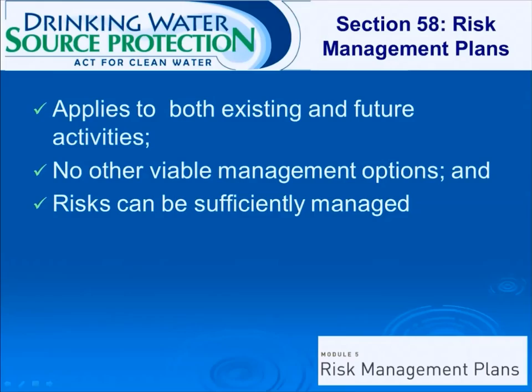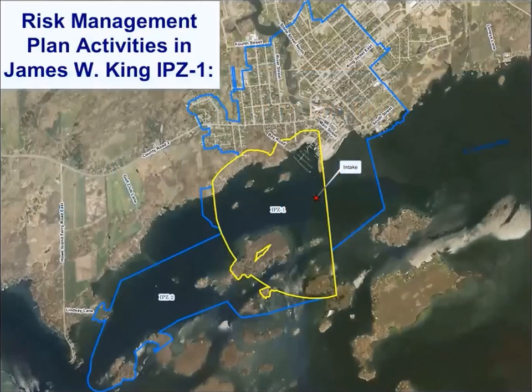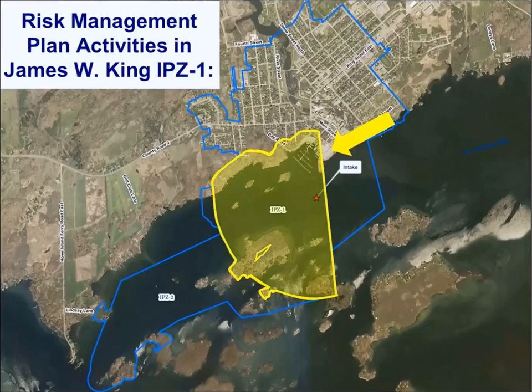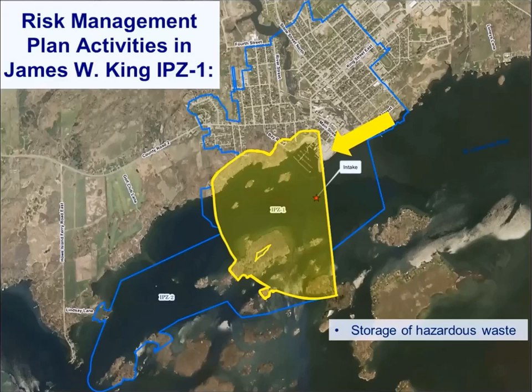In James W. King Intake Protection Zone 1, certain activities require the establishment of a risk management plan. Policy 7.5.2 in the Cataraqui Source Protection Plan requires risk management plans for the storage of hazardous waste at disposal sites in James W. King Intake Protection Zone 1. The required minimum risk management plan content includes consideration of the suitability of the storage container, the repair or replacement of defective or unsuitable storage equipment, staff training, and collection of waste materials by a licensed and qualified hazardous waste collector.